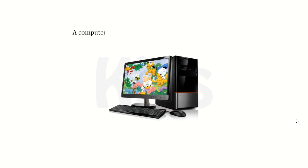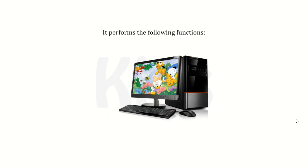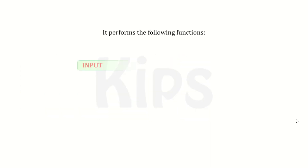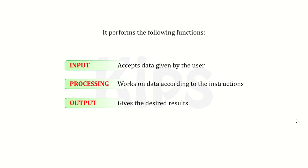A computer is one of the greatest inventions of mankind. It performs the following functions: Input function — accepts data given by the user. Processing function — works on data according to the instructions. Output function — gives the desired results. Storage function — stores the information.